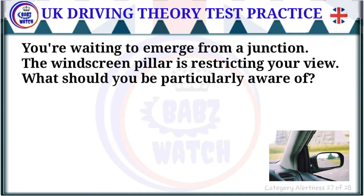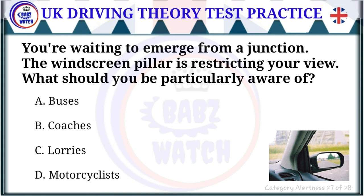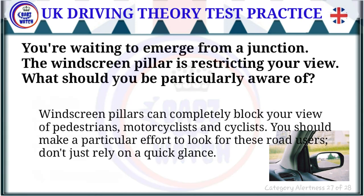Question 27 of 28: You're waiting to emerge from a junction and the windscreen pillar is restricting your view. What should you be particularly aware of? The correct answer is: motorcyclists. Windscreen pillars can completely block your view of pedestrians, motorcyclists and cyclists. Make a particular effort to look for these road users — don't just rely on a quick glance.